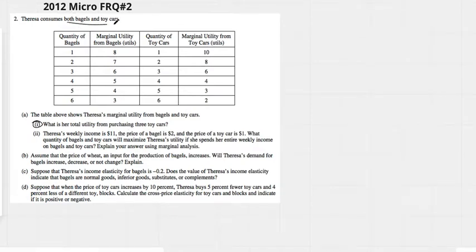Teresa consumes both bagels and toy cars. This is giving us her marginal utility. What is her total utility from purchasing three toy cars?